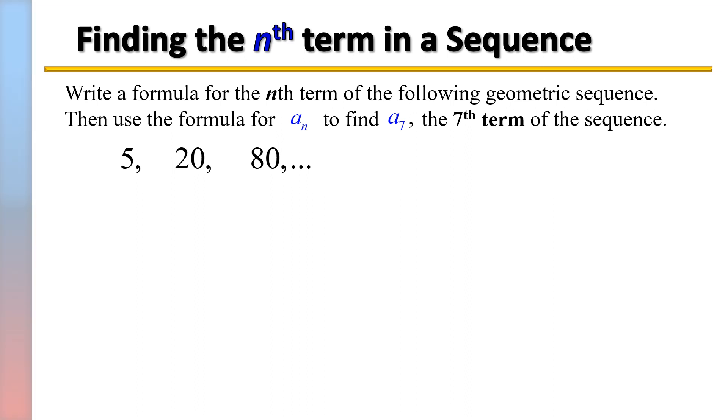In this example, we're asked to write a formula for the nth term of the following geometric sequence, then use the formula for a_n to find a_7, the seventh term of the sequence.